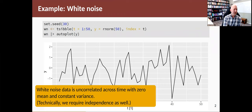White noise data is data that's uncorrelated across time with zero mean and constant variance. We also need independence, but because this is Gaussian distribution, normally distributed, we don't actually need to state the independence. In general, if you don't have Gaussian data, you will also need to ensure you have independent values.